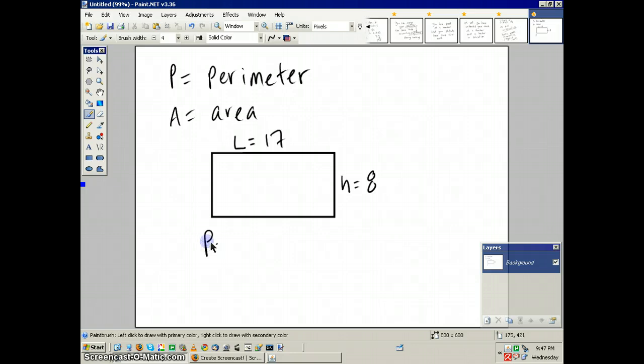So perimeter equals 2L plus 2H, which gives us a value of perimeter equals 2 times 17 plus 2 times 8. Simple math here. P equals 34 plus 16, which gives us a total perimeter of 50.